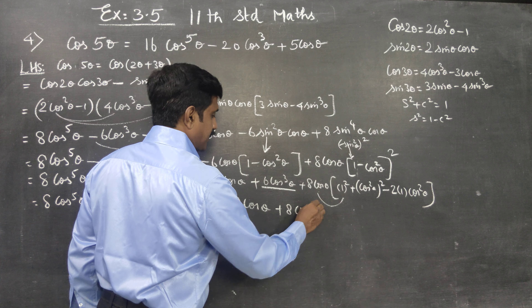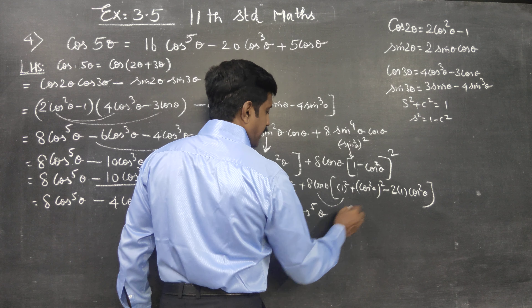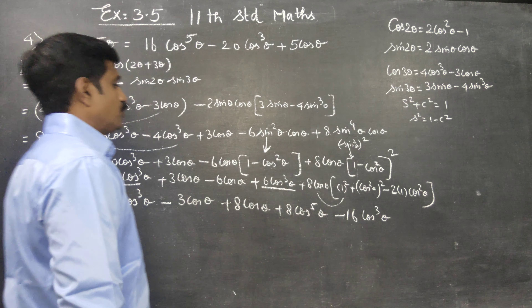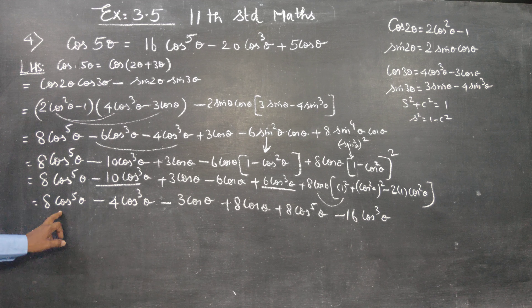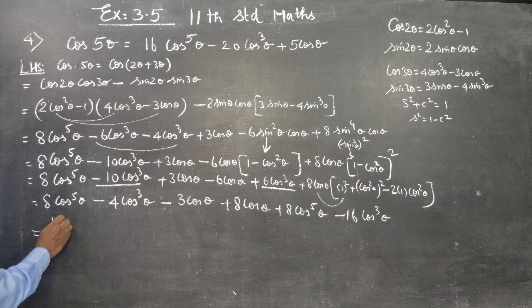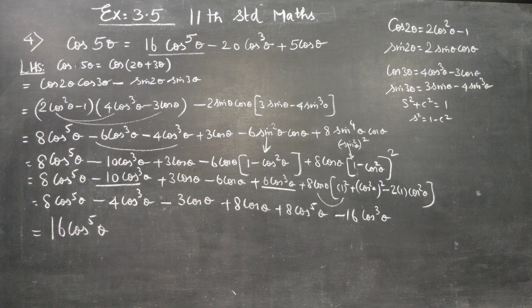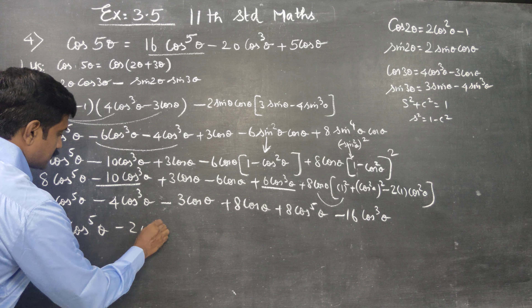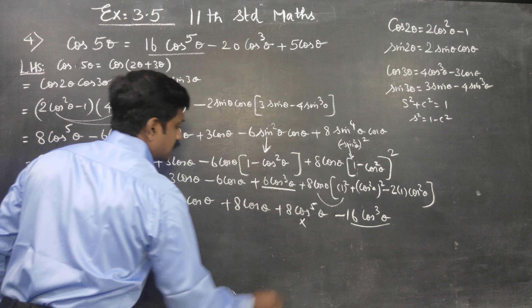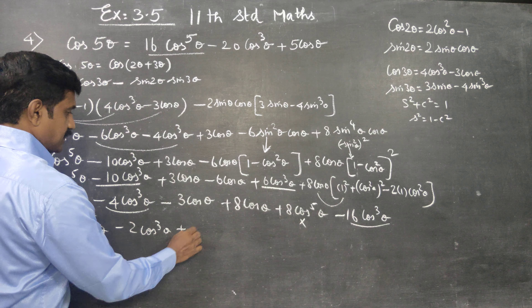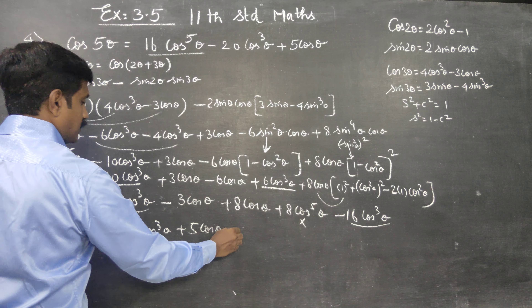So we get 16cos⁵θ - 20cos³θ + 5cosθ. This is equal to your RHS. So cos5θ = 16cos⁵θ - 20cos³θ + 5cosθ. LHS = RHS. Hence proved.